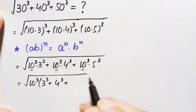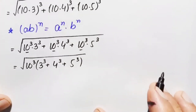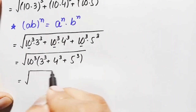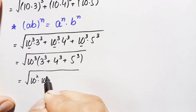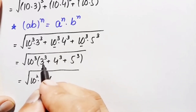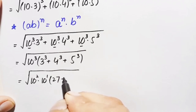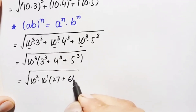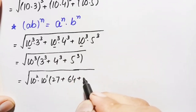We can write 10 cubed as 10 squared times 10. Now, 3 cubed is 3×3×3 = 27; 4 cubed is 4×4×4 = 64; and 5 cubed is 5×5×5 = 125.